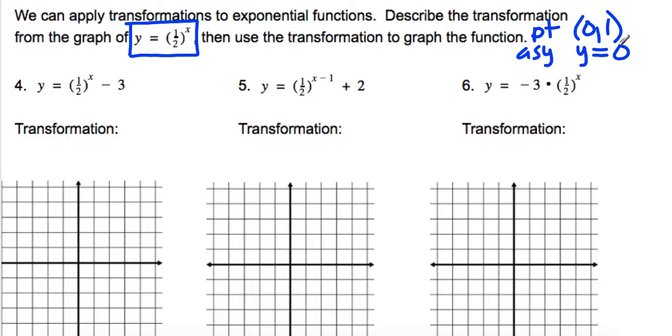So let's take a look at this. On number 4, we have 1 half to the x minus 3. That minus 3 is going to cause this to go down 3. So instead of the point 0, 1, we're going to go down 3. And that's our new point. And asymptote y equals 0 is also going to move down 3. And there it is.